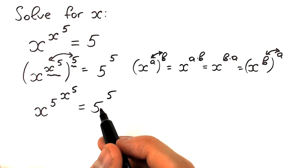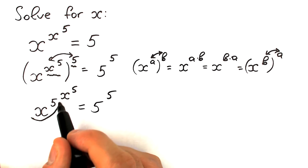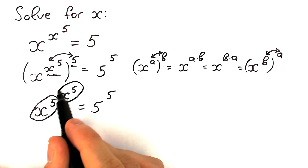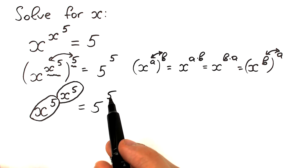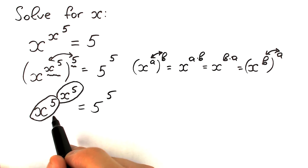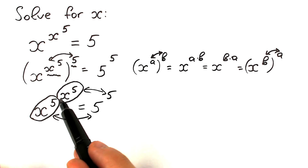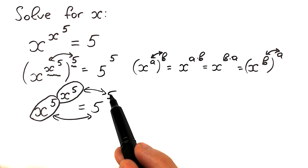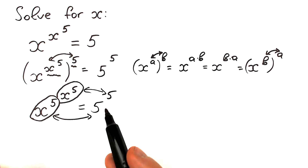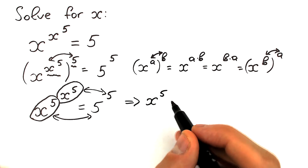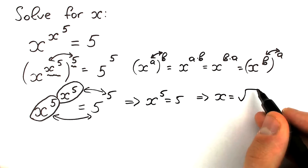If you look closely, on the right-hand side we have the same base and same exponent — we have 5 and 5. On the left-hand side we have x to the power 5 as the base, and x to the power 5 as the exponent — the same base and same exponent. So the one and only case this equation has roots is when x to the power 5 equals 5. Base equals base and exponent equals exponent, giving us x to the power 5 equal to 5. Taking the fifth root of both sides, x equals the fifth root of 5.